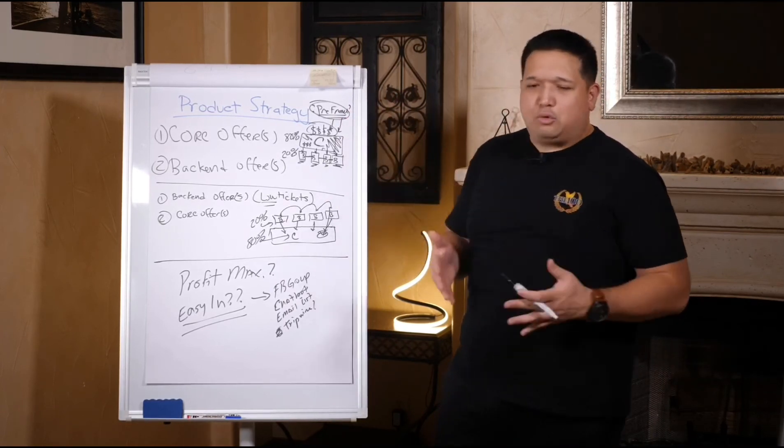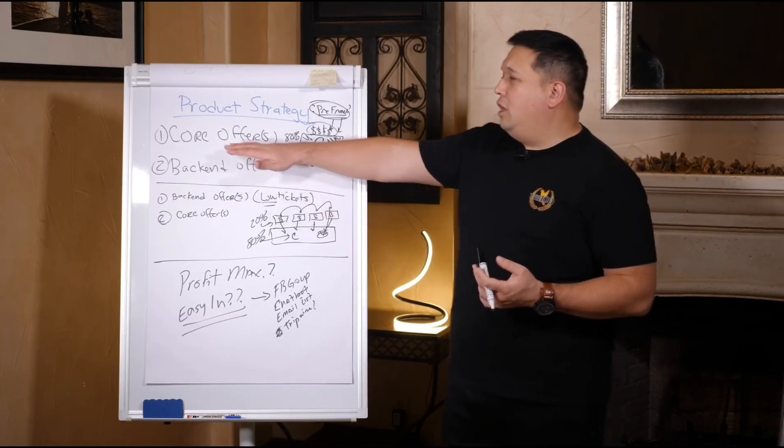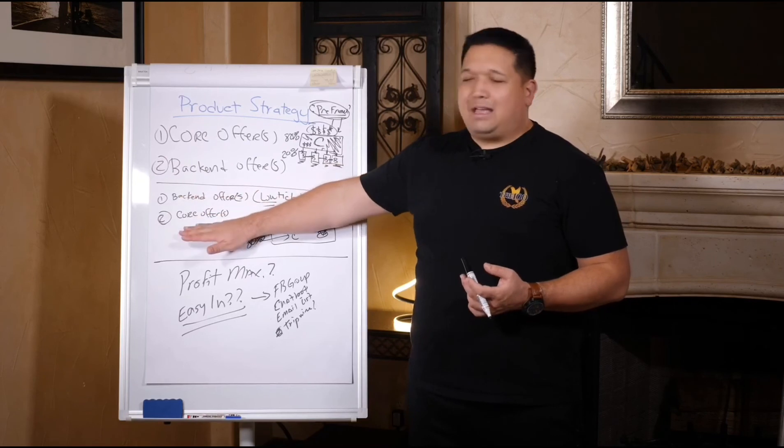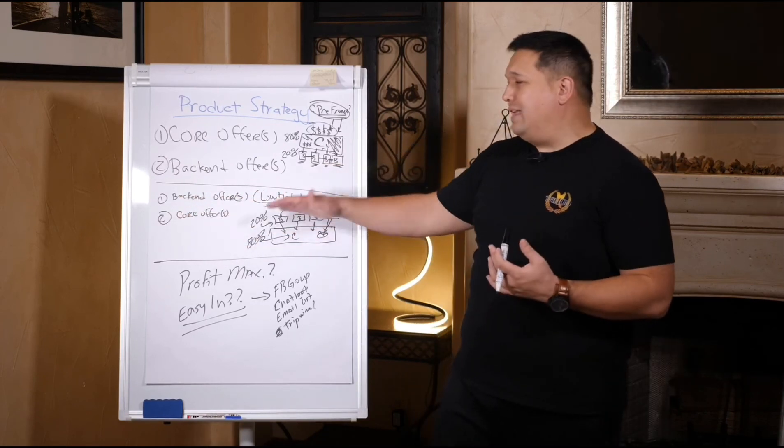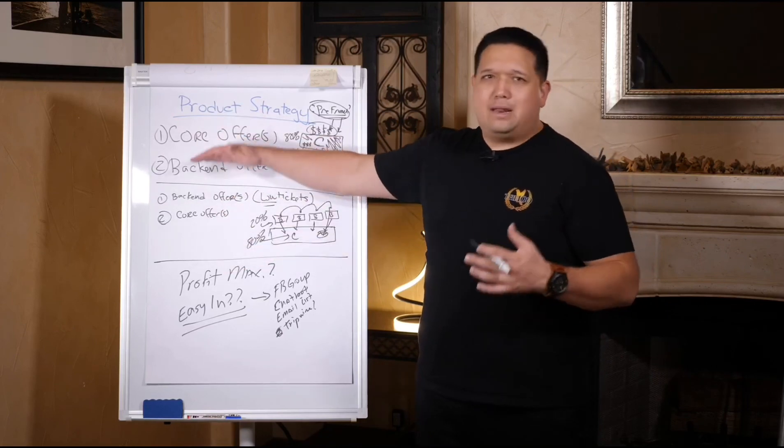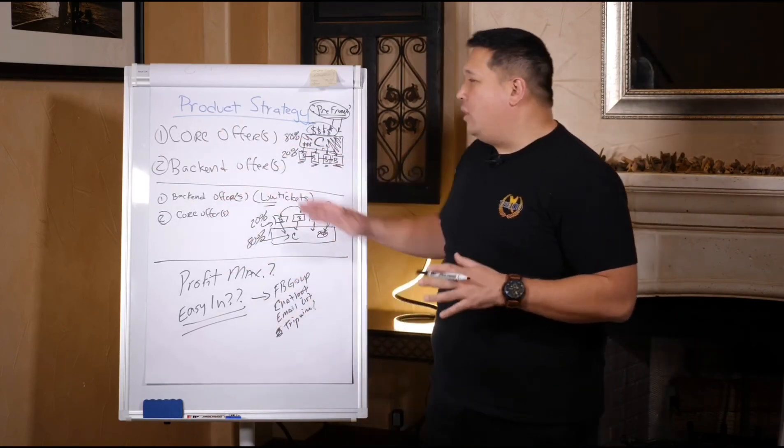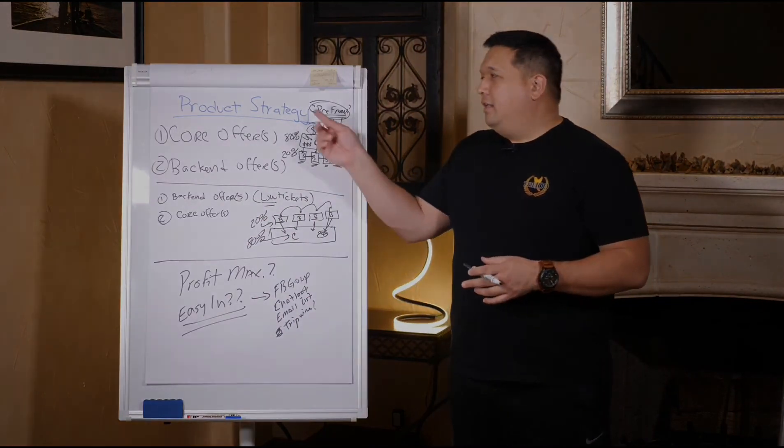That is your product strategy. I want you to write in the Facebook group: are you going to do core offer to backend, or are you going to do backend to core offer? What are you doing? You can call backend low ticket as well, you can call it high ticket low ticket, you can call it front end and backend, whatever you want to call it guys. It's not about the nomenclature, this is 100% about understanding the strategies.